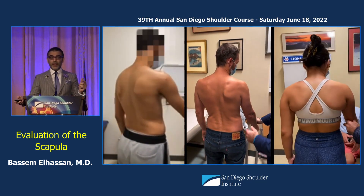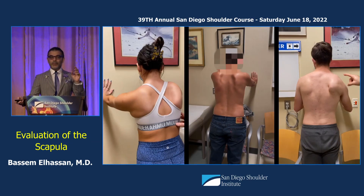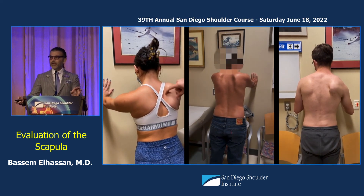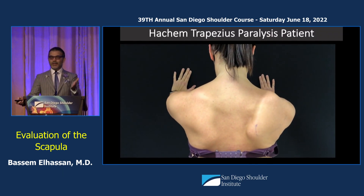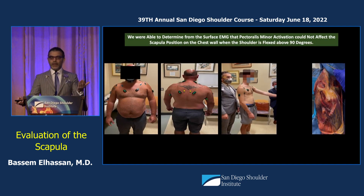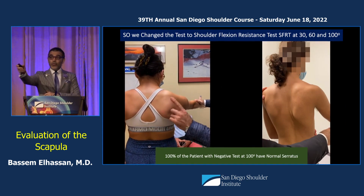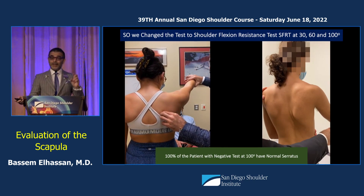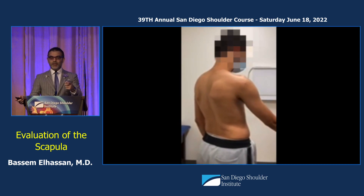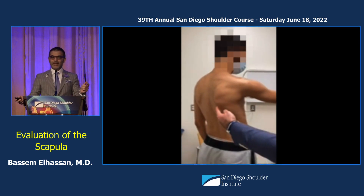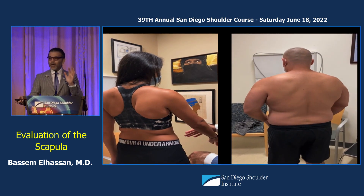We have three patients with perfect serratus and perfect trapezius who have scapular winging on flexion at 30 degrees, positive wall push-up test, and patients with trapezius paralysis also showing a positive wall push-up test. Surface EMG showed that the pect minor can take over and wing the scapula at 30 degrees, but above 90 degrees the pect minor cannot engage anymore. So if you do the test above 90 degrees and the scapula does not wing, it means the serratus is perfect and the pect minor was the problem. Positive at 30 and 60 but negative at 100 means serratus is normal.